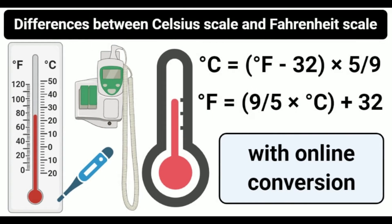After May 2019, the absolute zero — the lowest temperature possible — is denoted by 0 K, or −273.15°C. Before that, the temperature of the triple point of water was defined exactly at 273.16 K, or 0.01°C. The average human body temperature is 37°C on the Celsius scale. The formula for conversion of Celsius to Fahrenheit is °F = (9/5 × °C) + 32. Celsius scale is commonly used in areas that use metric system units and thus is used for all scientific purposes.